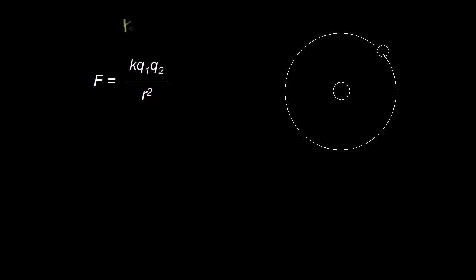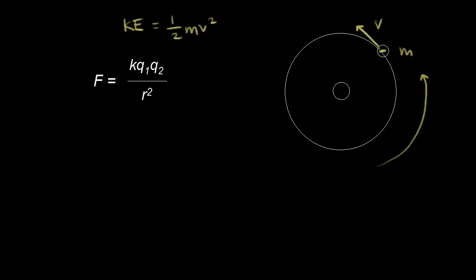First, we're going to try to find the kinetic energy of the electron. We know that kinetic energy is equal to one-half mv squared, where m is the mass of the electron and v is the velocity. So if our electron is orbiting the nucleus, the velocity vector would be tangent at that point.